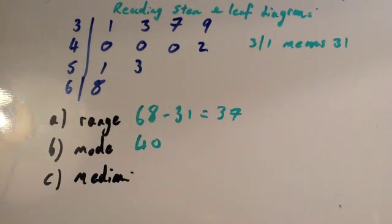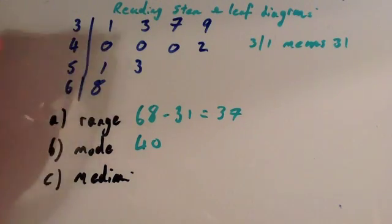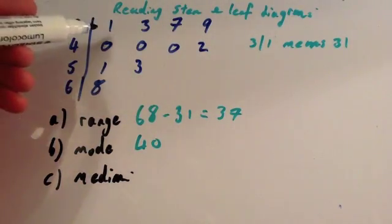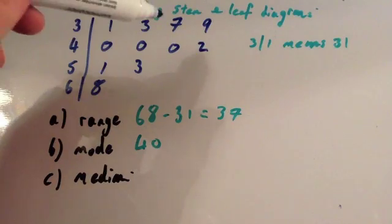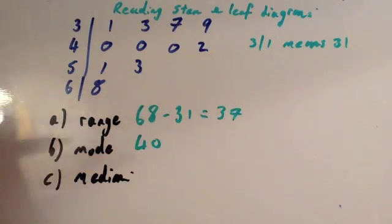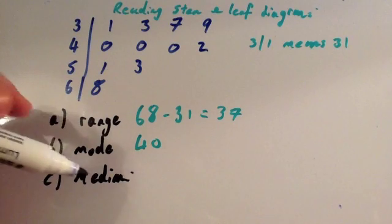Next, we're going to work out the median. The median's the middle number once the numbers are arranged in numerical order. It's the nicest diagram because it is already in numerical order. You can see 31, 33, 37, 39, 40, 40. It's all arranged in numerical order. So we're going to work out the median.